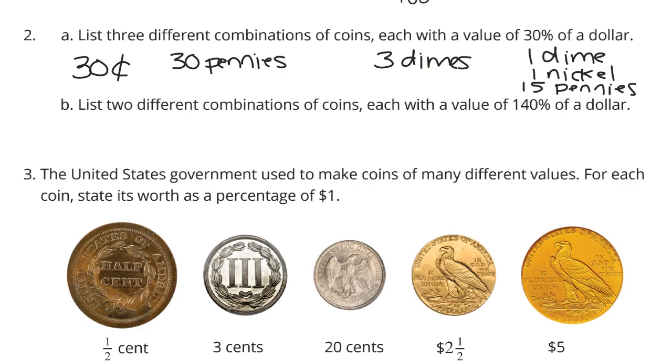All right. What about two different combinations of coins, each with a value of 140% of a dollar? Well, 140% of a dollar is going to be 140 cents, and let's start off with our fun one again, 140 pennies. That certainly will get it done. As well will 14 dimes.